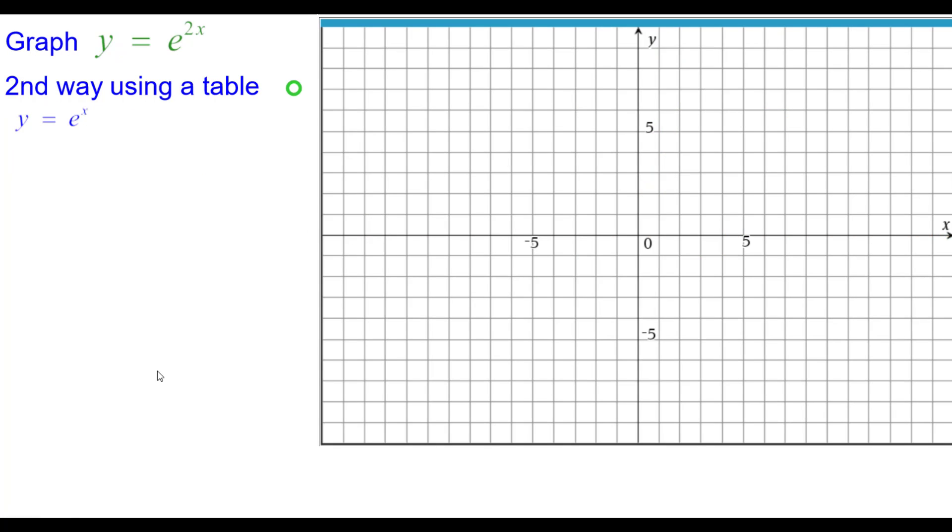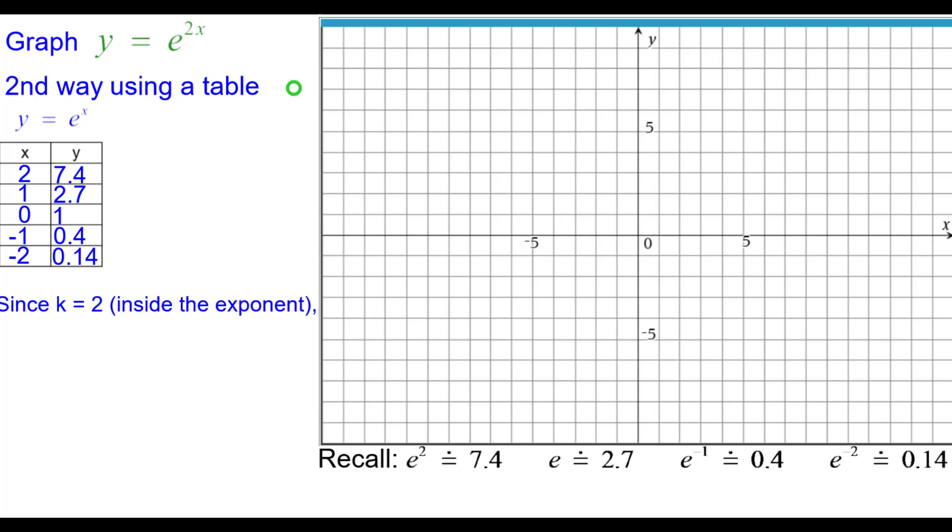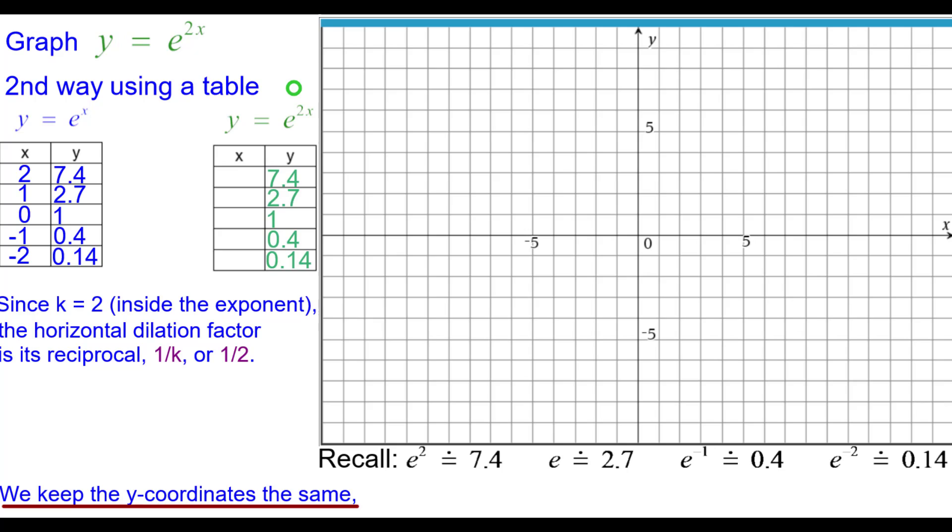Second way is using a table. So this is our traditional values for y equals e to the x that we should know. Since k equals 2 inside the exponent there, the horizontal dilation factor is its reciprocal, which is a half. Recall that we keep the y-coordinates the same, but we multiply each x-coordinate by 1 half in this case, 1 over k.